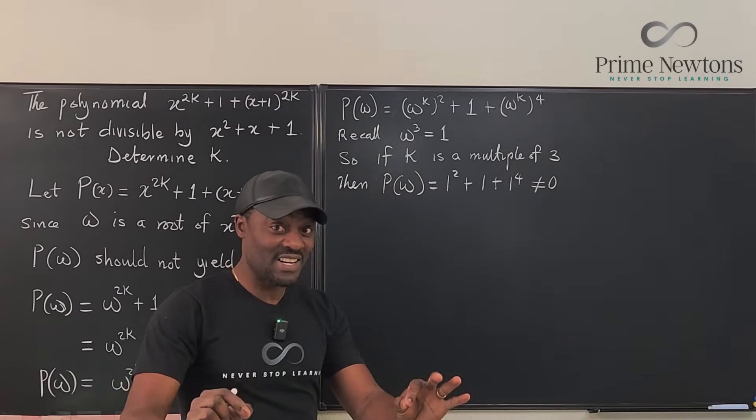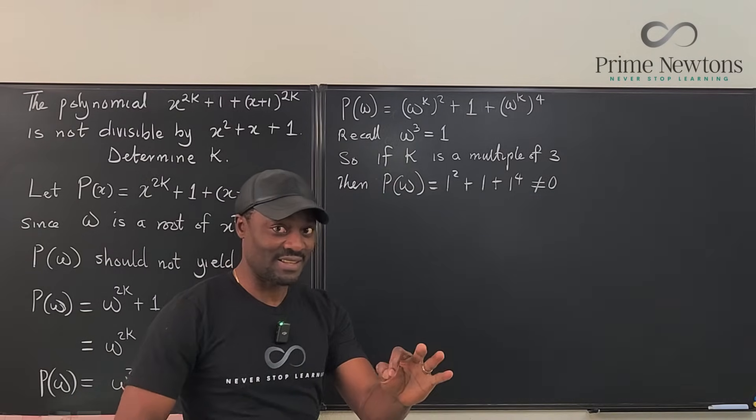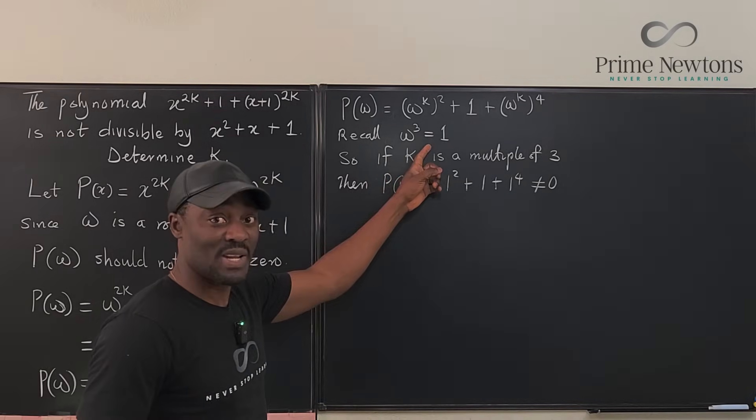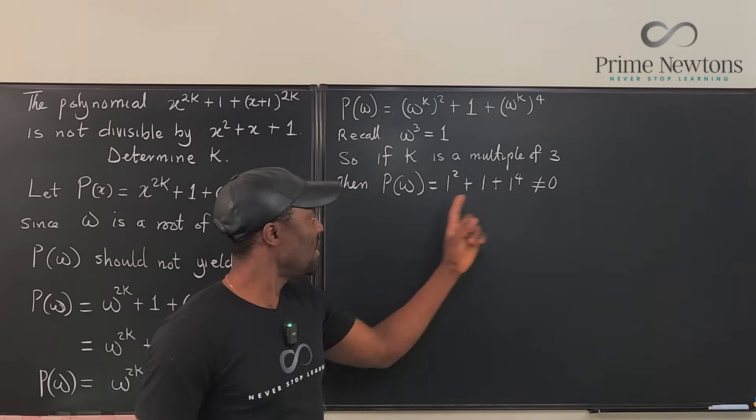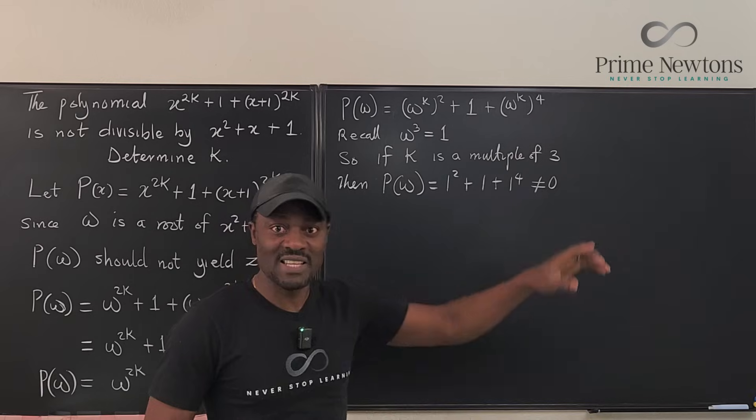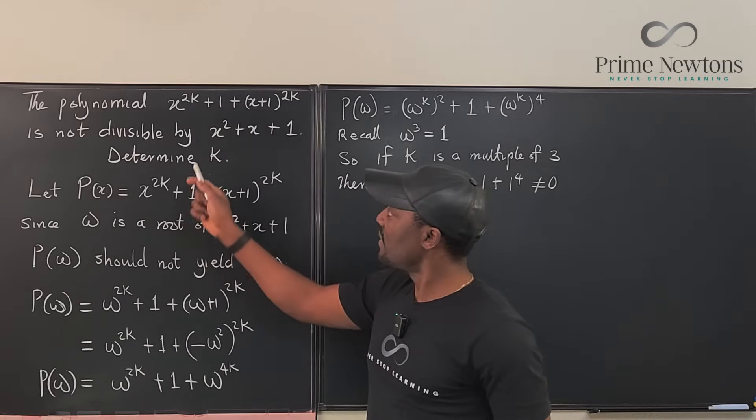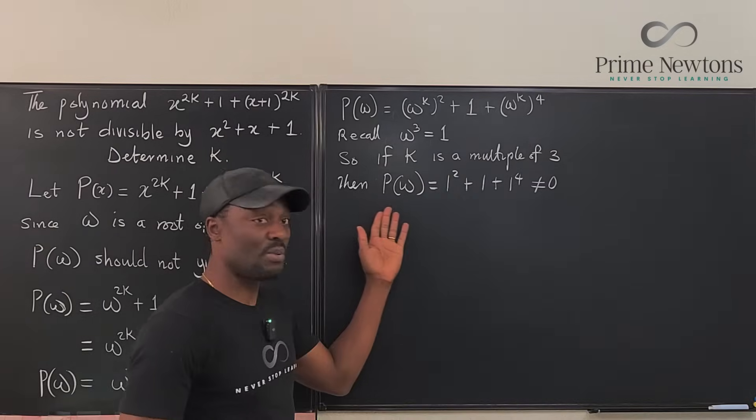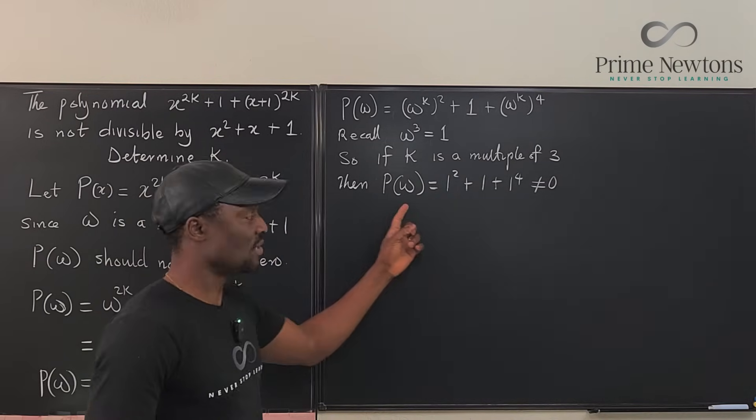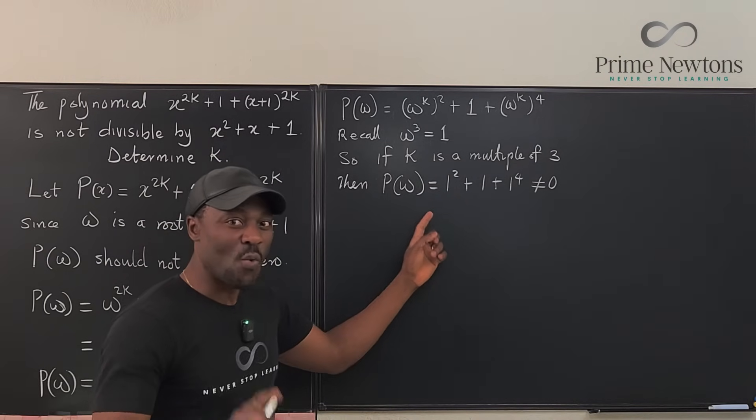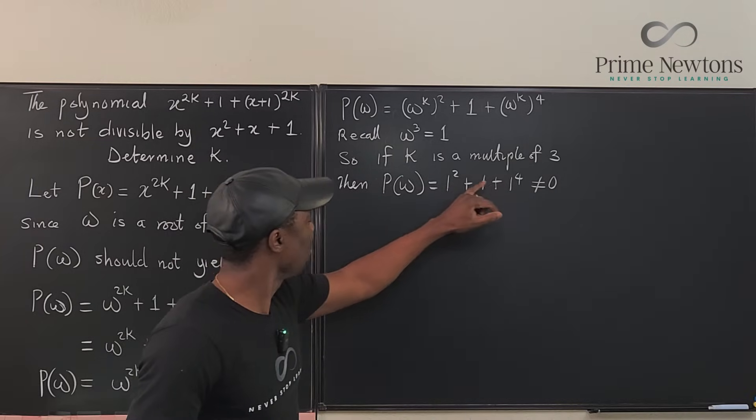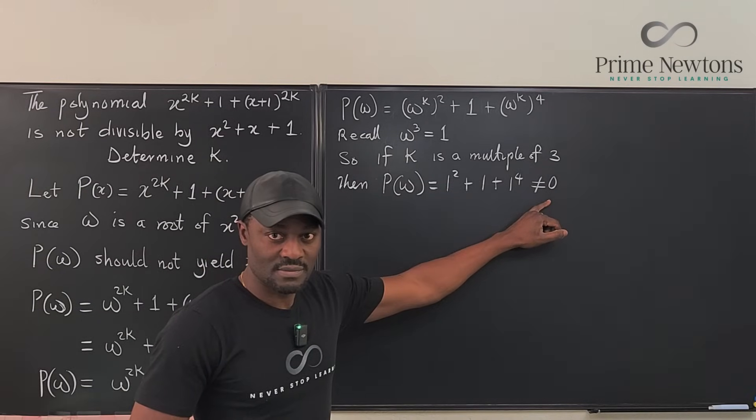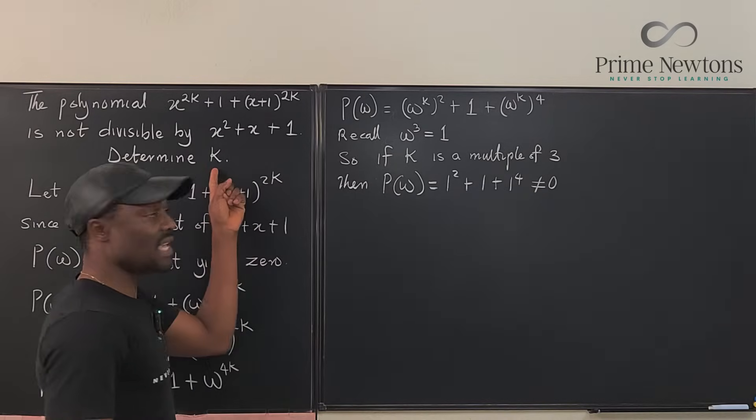So, we have found a clear condition that k is, based on this fact, that if k is a multiple of 3, we're not going to get zero. We're going to get 1 in each of these terms, and that satisfies this condition, that this polynomial is not divisible by this because we did not get a zero when we plugged in the root of this, which is omega. So, one condition is clear. If k is a multiple of 3, then we're not going to get a zero. We have determined k.